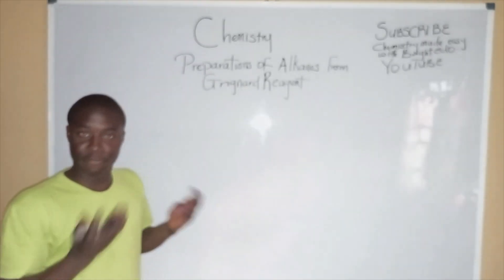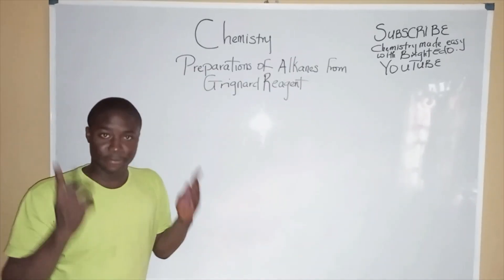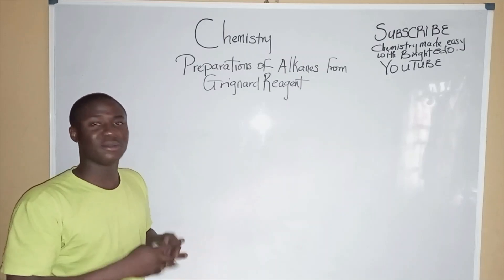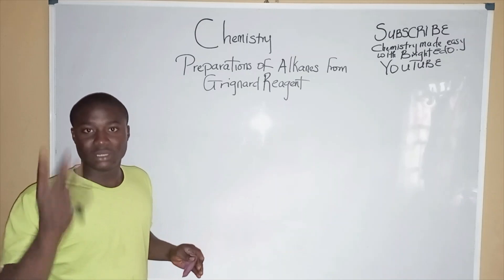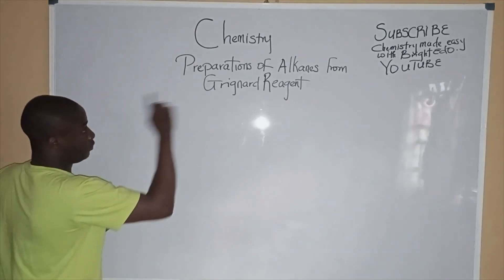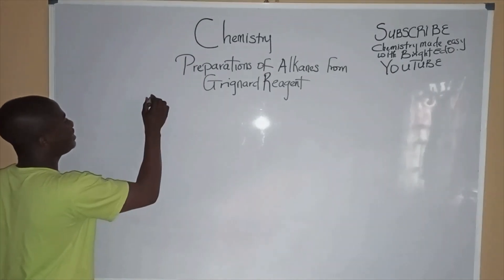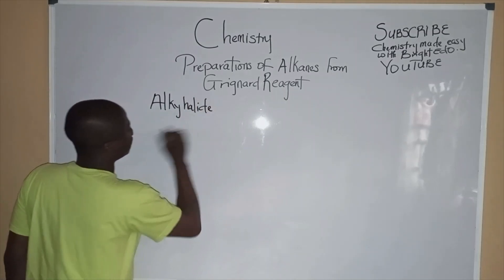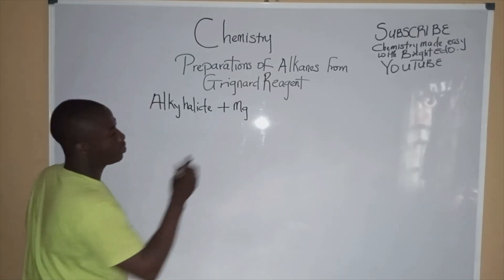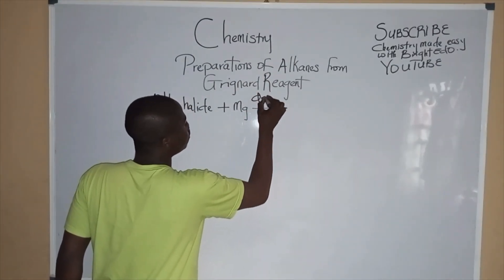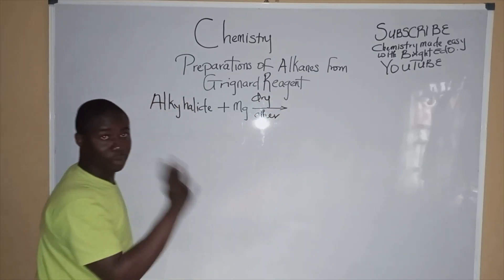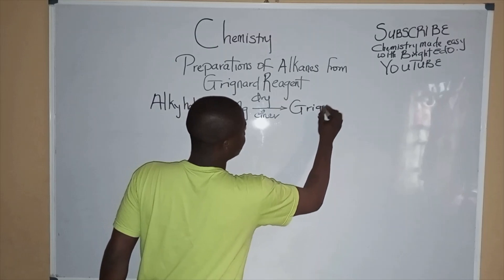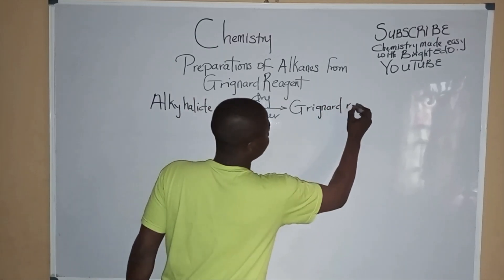How is the Grignard Reagent formed? The Grignard Reagent is formed by reacting an alkyl halide with magnesium metal in the presence of dry ether. In the presence of dry ether, we get the Grignard Reagent.